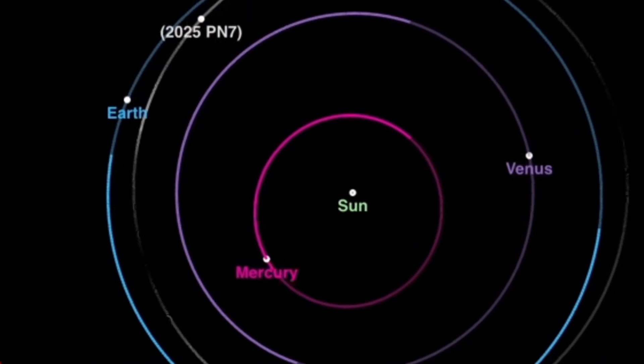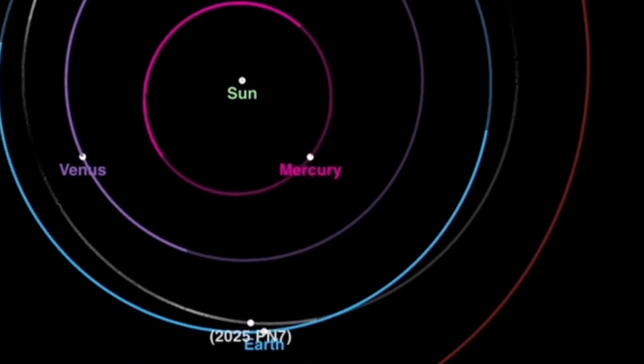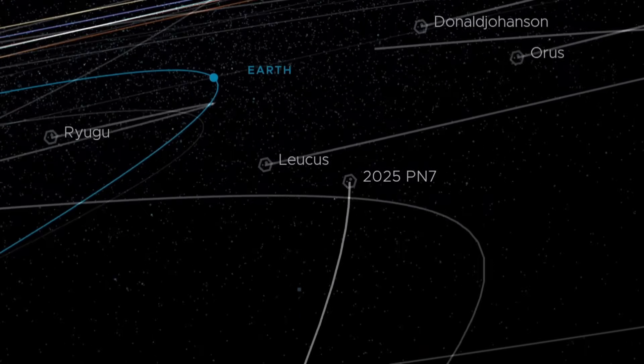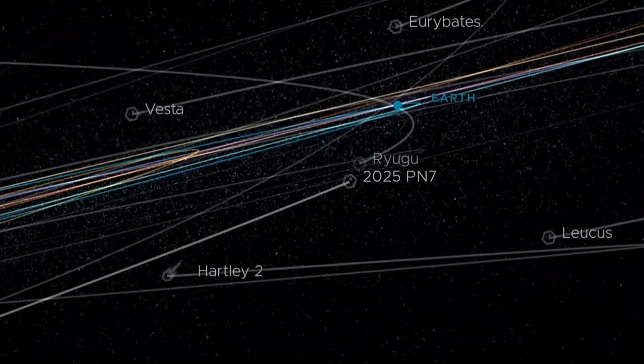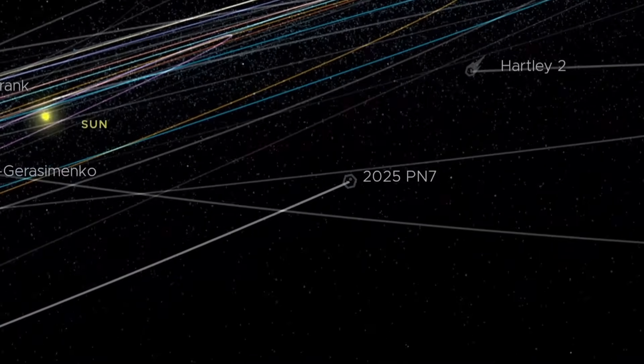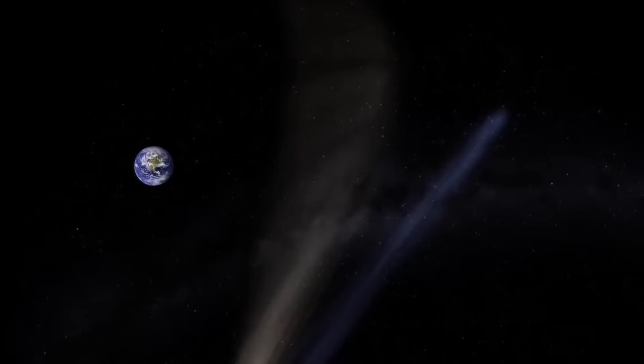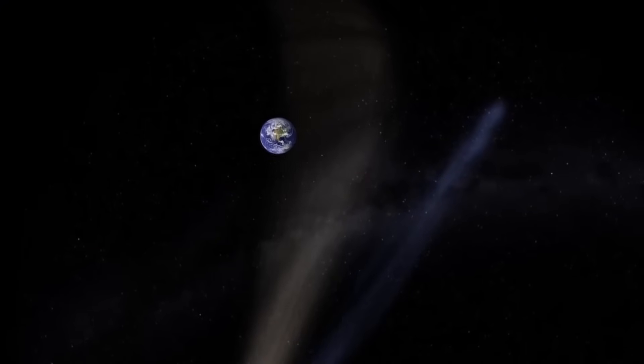In short, 2025 PN7 is an interesting guest in Earth's orbital neighborhood, and while it could affect future asteroid flybys, the odds are so small that it's far from a concern. Scientists will keep tracking all these objects and refining our predictions.